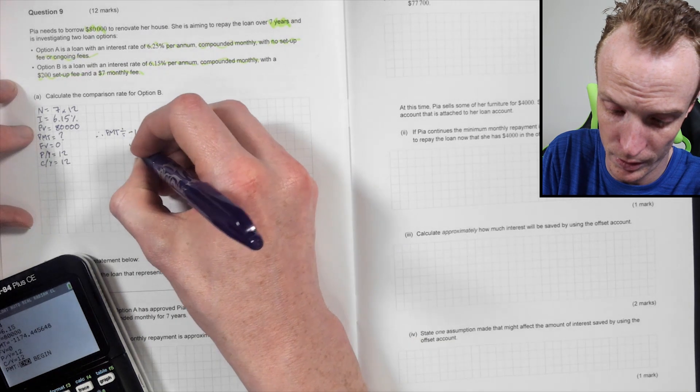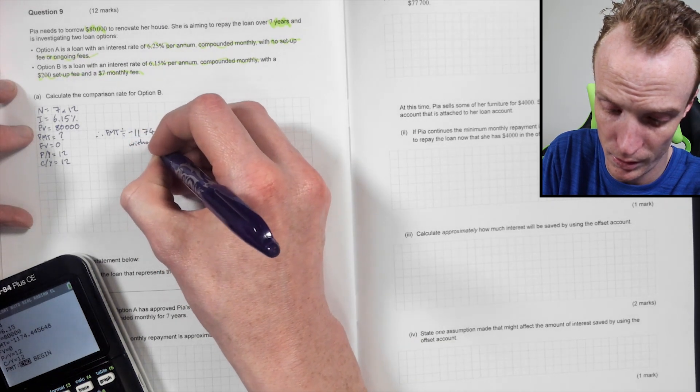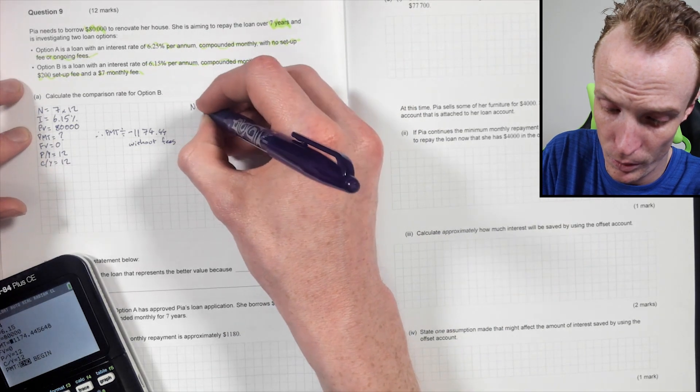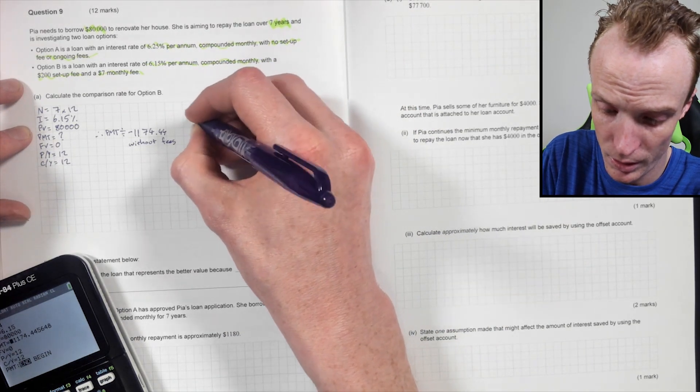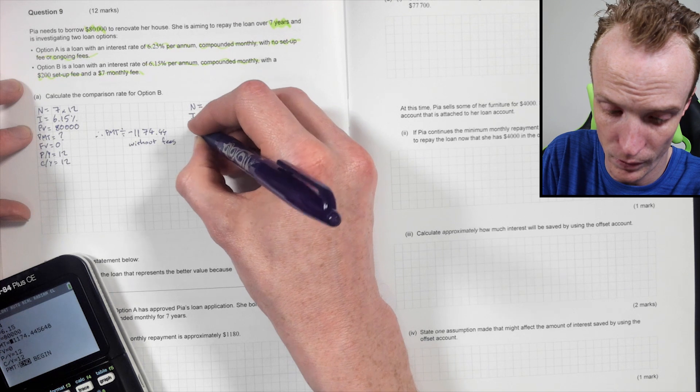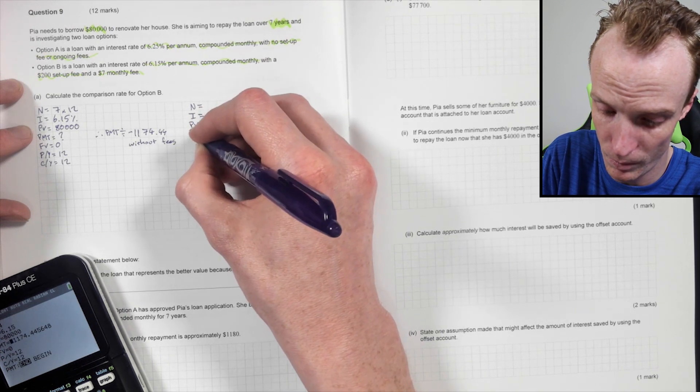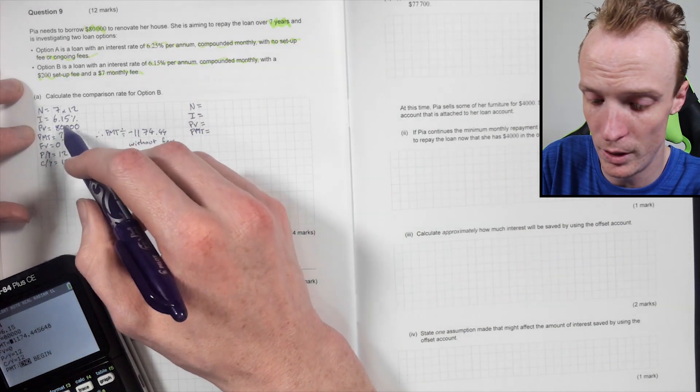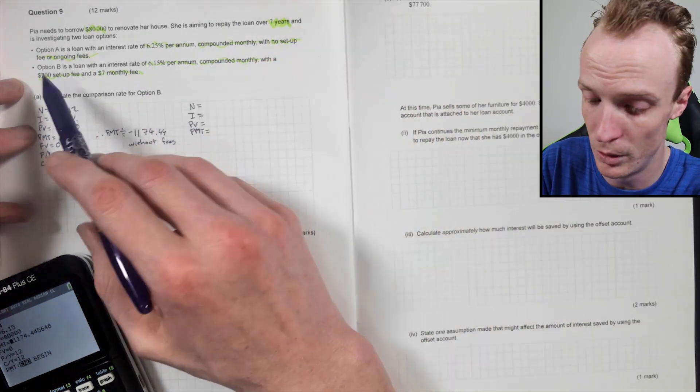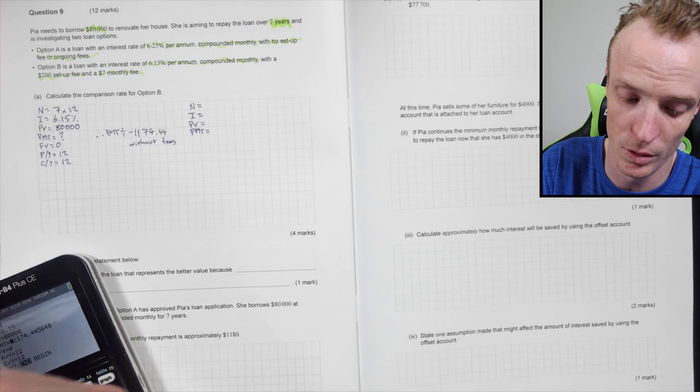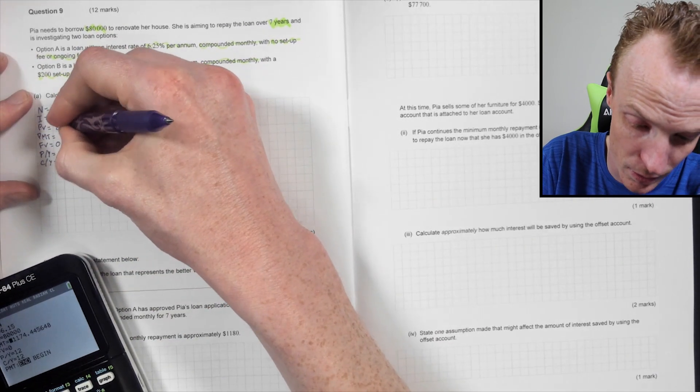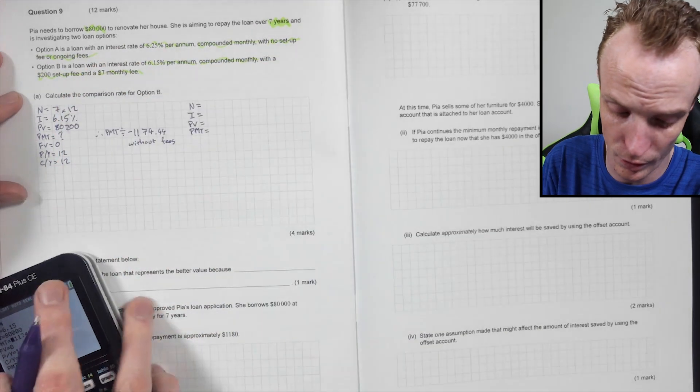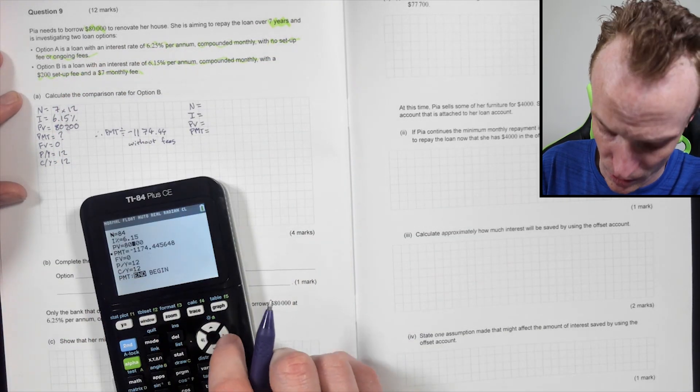So let's just put this in without fees. Just so I'm acknowledging that. Then I want to put this back into one of these. So N I PV PMT. Oh, hang on. I need to do that with the setup fee added to it. So that'll be 80,200. Be slightly different to what I did. My mistake. 80,200. It won't be much different.